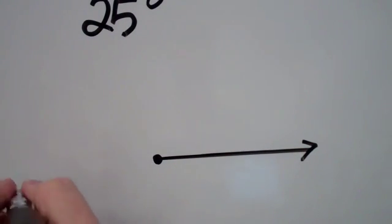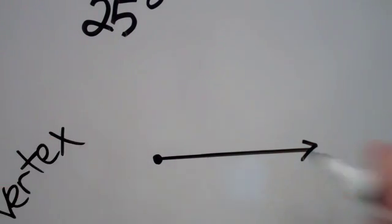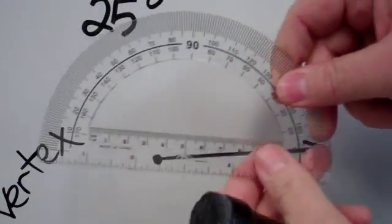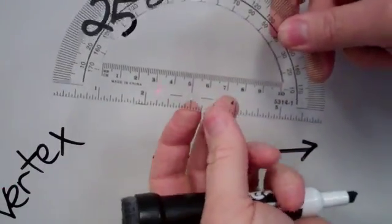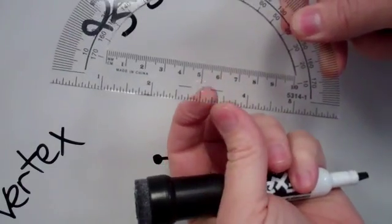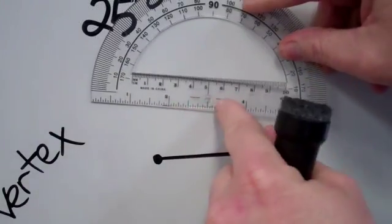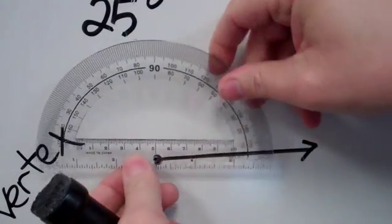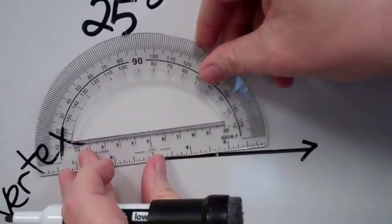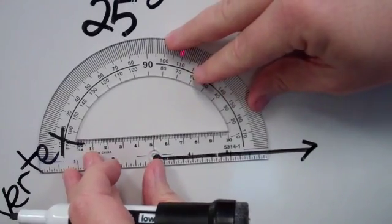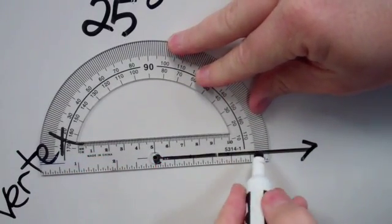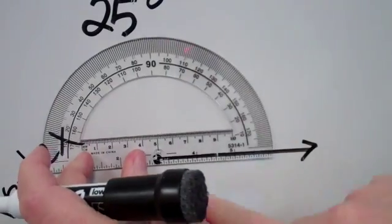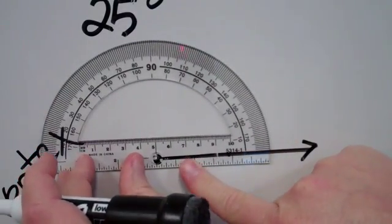What we're going to do is take the protractor. The protractor has a little hole right here, the target. I'm going to put that target right on the vertex of our angle and make it line up so that my zero is right on the leg of this ray.